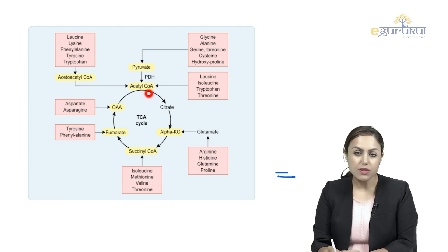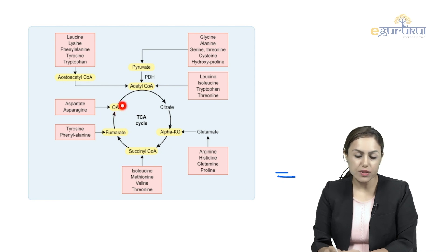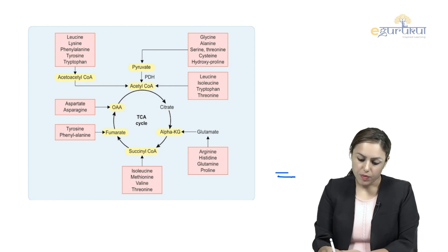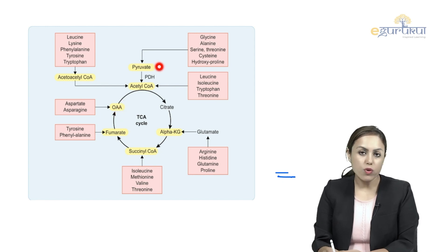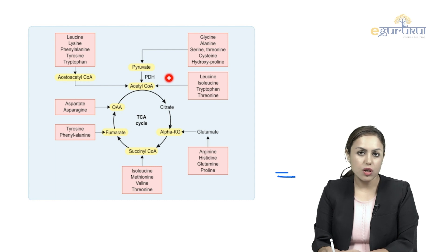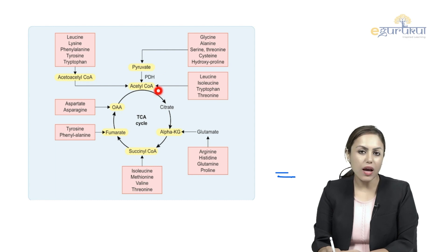TCA cycle: acetyl-CoA, citrate, and all these TCA intermediates. Then this is pyruvate via PDH link reaction — pyruvate forms acetyl-CoA.